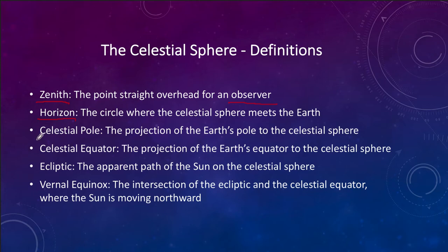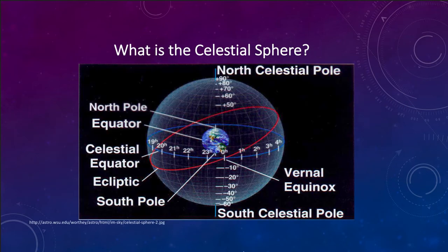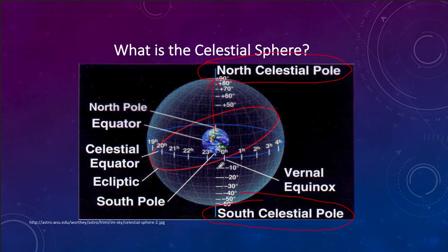We also have the celestial poles. There are two of these — the north and south celestial pole — which are just the projections of the Earth's poles onto the celestial sphere. There is one in the north and one in the south. So if you imagine the north pole going straight up, it will intersect the celestial sphere there, and the south pole going straight down will intersect the celestial sphere at the lower location.